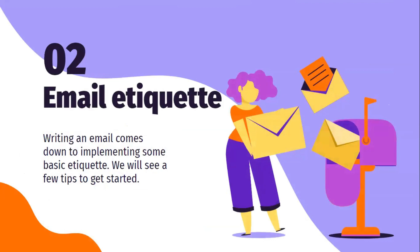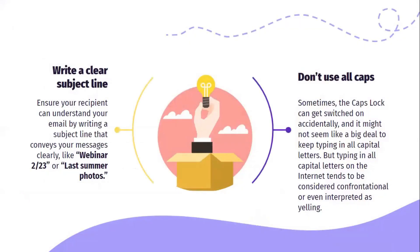Email etiquette — writing an email comes down to implementing some basic etiquette. We'll see a few tips to get started. First, write a clear subject line. Ensure your recipient can understand your email by writing a subject line that conveys your message clearly — for example, 'Webinar February 2023' or 'Last Summer Photos.' That subject line should give the person an indication of what information you are trying to share.